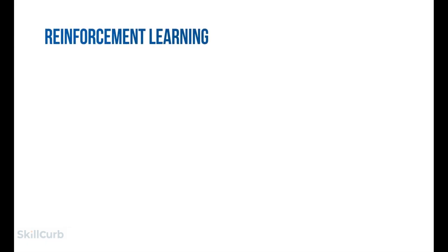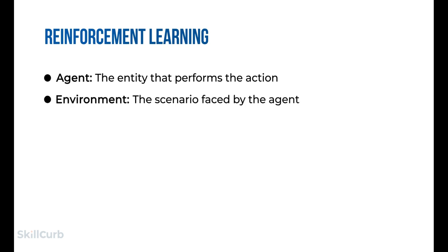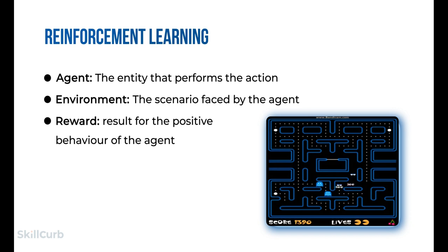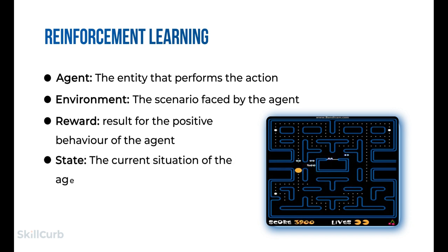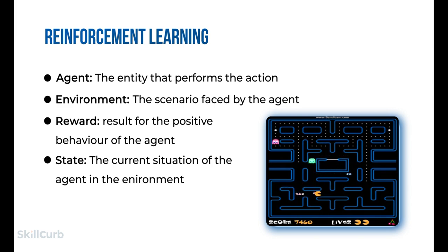Let's discuss important terminology related to reinforcement learning using the game of Pac-Man. The agent is an entity that performs the action — Pac-Man's goal is to eat food in the grid while avoiding ghosts. The environment is the grid world the agent interacts in. The reward is the result of positive behavior — Pac-Man receives a reward for eating food and punishment if killed by ghosts. The state is the current location of Pac-Man in the grid world, and the total cumulative reward is Pac-Man winning the game.